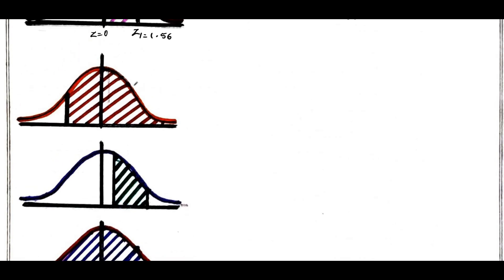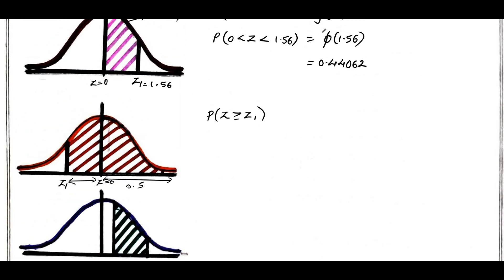Next, I have taken another value which I consider as z1. This means I need to find out the probability of z greater than or equal to z1. Giving the theoretical approach: the area of the right half portion is 0.5, as I explained earlier, and the area from 0 to z1 is given by phi of z1.